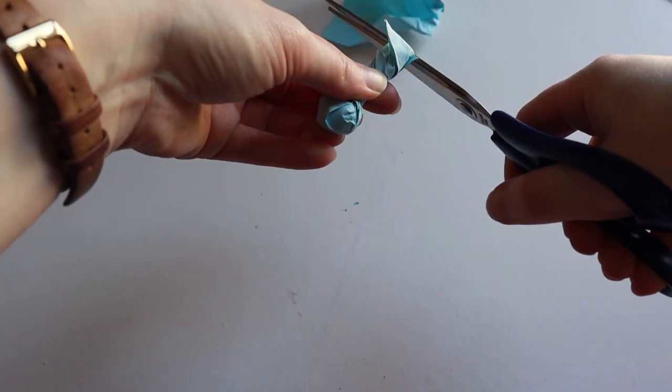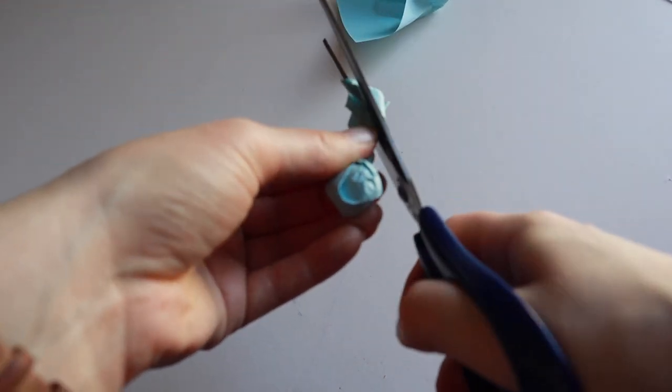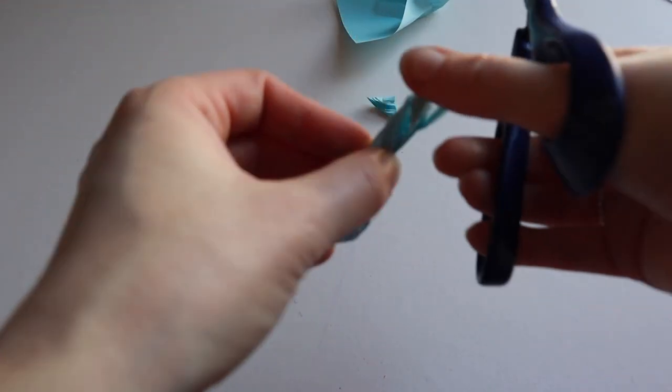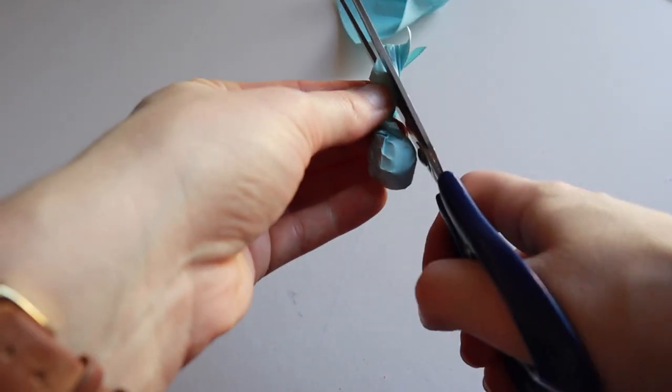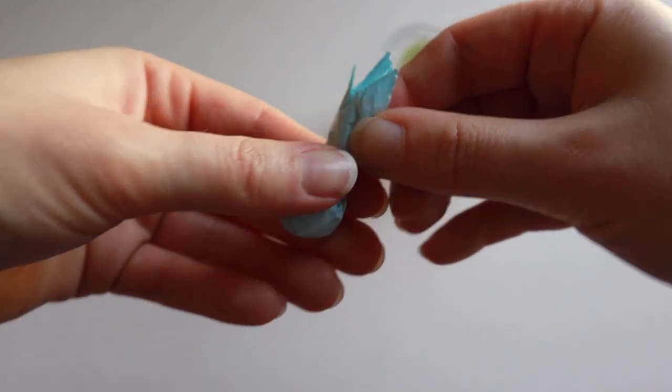Cut off most of the excess paper but leave a short stalk. Cut the stalk into a point and use sellotape to wrap up the whole stalk.